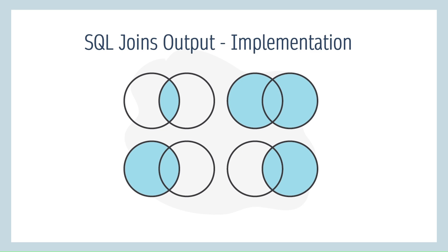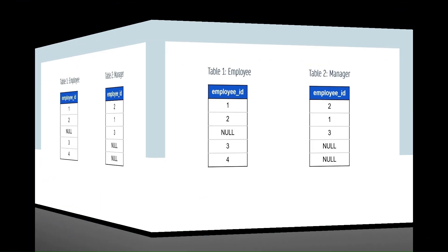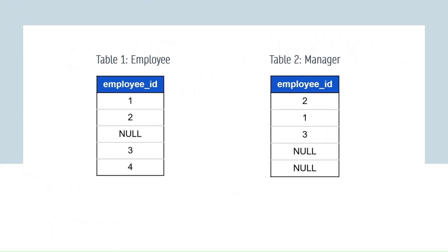Hi everyone, welcome back to my channel. In today's video we are going to see the outputs of various joins in SQL — what are the number of records shown when we join two tables based on left join, right join, inner join, and outer join. This is one of the most important and most commonly asked interview questions, so let's begin.